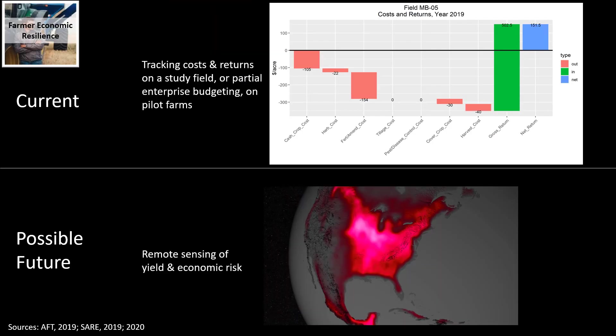The reason why many farmers have already adopted regenerative ag is because it's helped them become more profitable and resilient. The economic hypothesis of regenerative ag is that by restoring and enhancing their farm ecosystem, the farmer can maintain production while reducing their reliance on costly external inputs. But we need more data to answer critical questions from farmers, like how quickly can I become more profitable, or how much more profitable is regenerative ag? We're working to answer these questions by tracking costs and returns on a study field on each pilot farm, and by conducting partial enterprise budgets to understand how whole farm economics changed during the transition to regenerative systems.